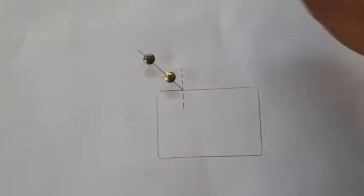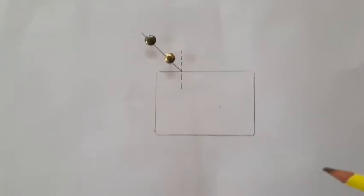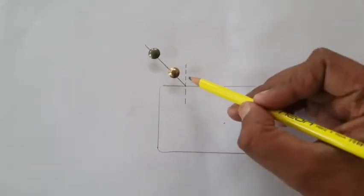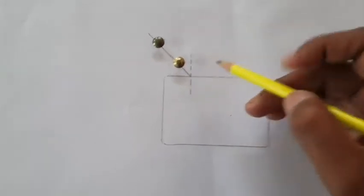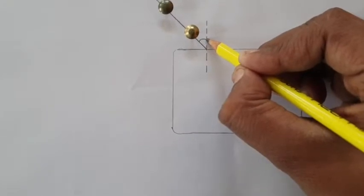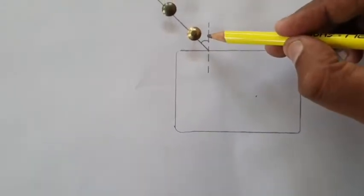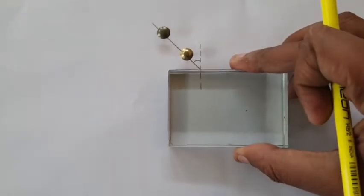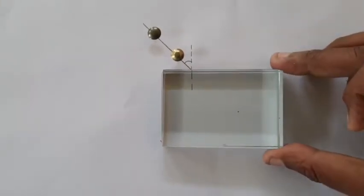So as you can see I have marked the incident ray and placed two pins which would be working as the object. I have also drawn the normal and I am marking the angle of incidence that is the angle formed between the incident ray and the normal. So now I will place the glass slab on this outline because we need to observe the two pins from the other side of the glass slab.